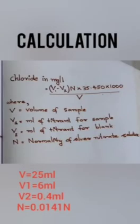Calculation: The amount of chloride in the given sample is calculated by using the equation V1 minus V2 into N into 35.45 into 1000 all divided by V. Where V is the volume of sample, V1 is the volume of titrant for sample, V2 is the volume of titrant for blank, and N is the normality of silver nitrate solution.